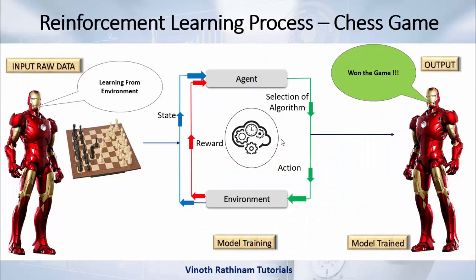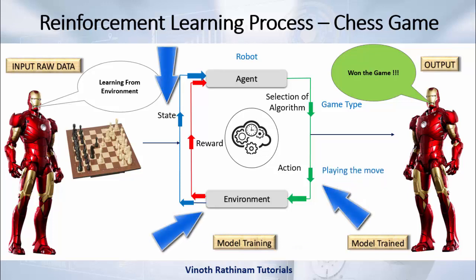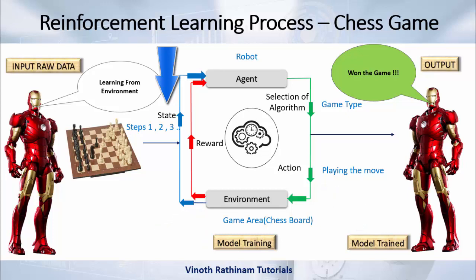The reinforcement learning process using the chess game: in this example we are making an Iron Man suit to play chess against a world champion. Here the robot is the agent. The robot knows the basics and starts the game by selection of an algorithm, which we call the game type — either offense or defense. Offense means the robot will be the first to hit the opponent; defense means the robot will wait for the opponent to attack and then plan accordingly. After selecting the algorithm, the robot starts moving pieces in the environment from one state to another. The environment is the game area and the state is the number of steps the robot has played — step 0, then 1, 2, 3 — the process keeps repeating like a circle.